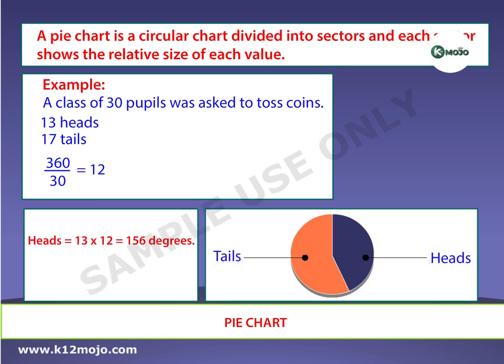Heads: 13 into 12 is equal to 156 degrees. Tails: 17 into 12 is equal to 204 degrees. Construct a pie chart with a protractor.